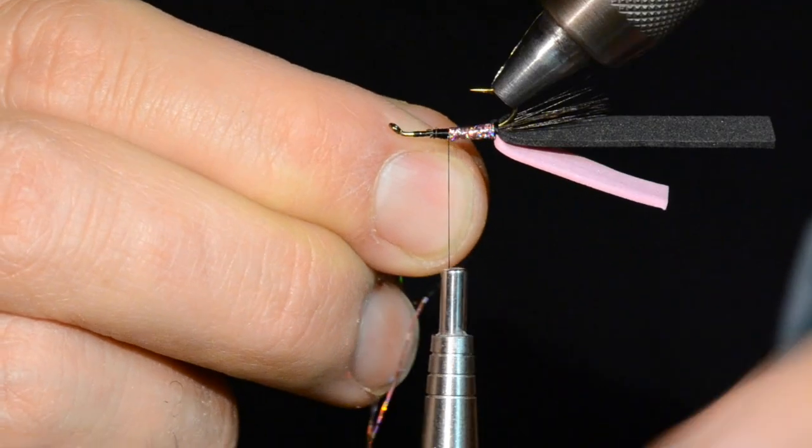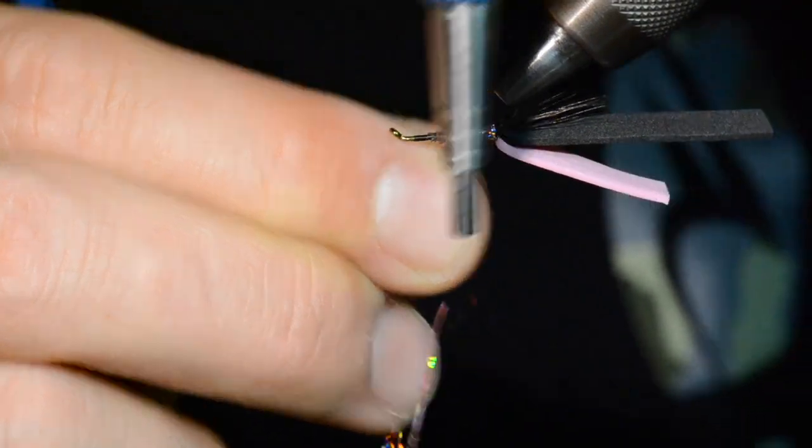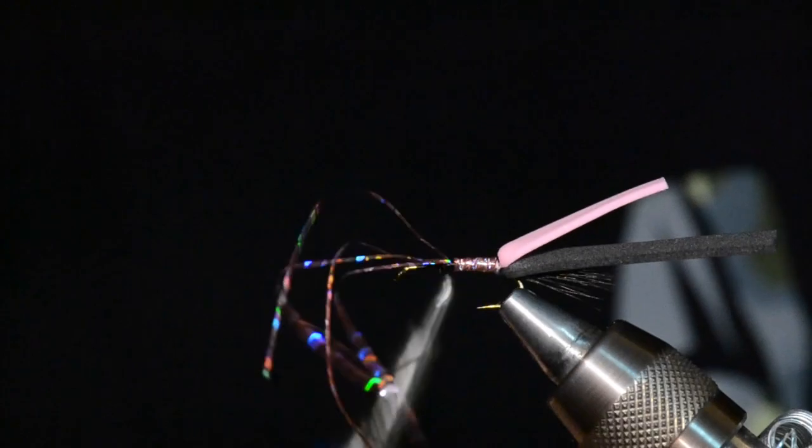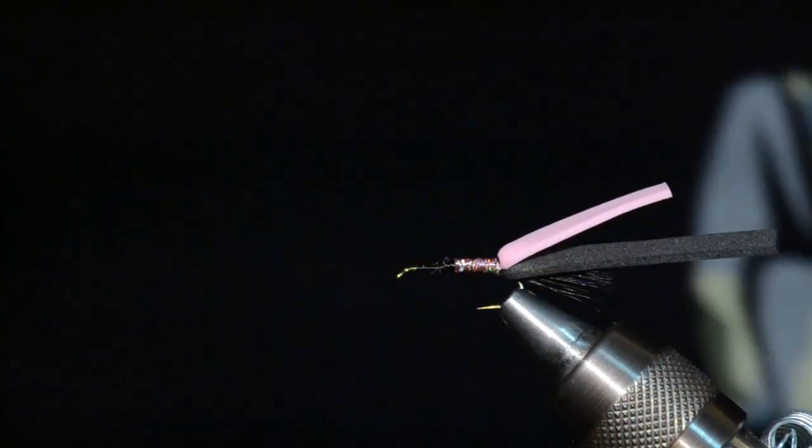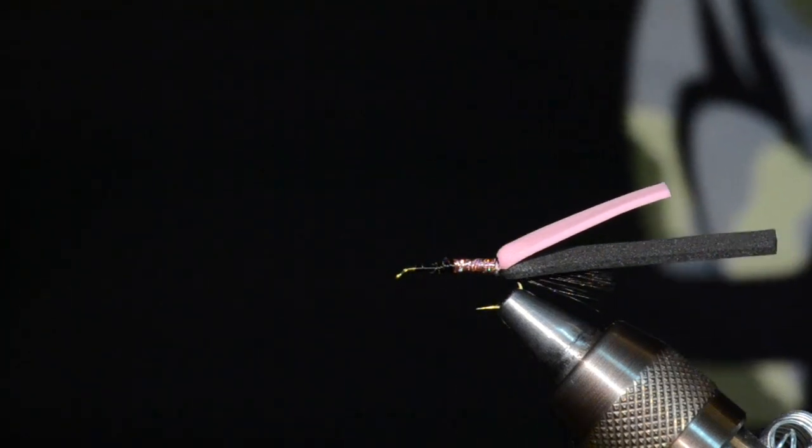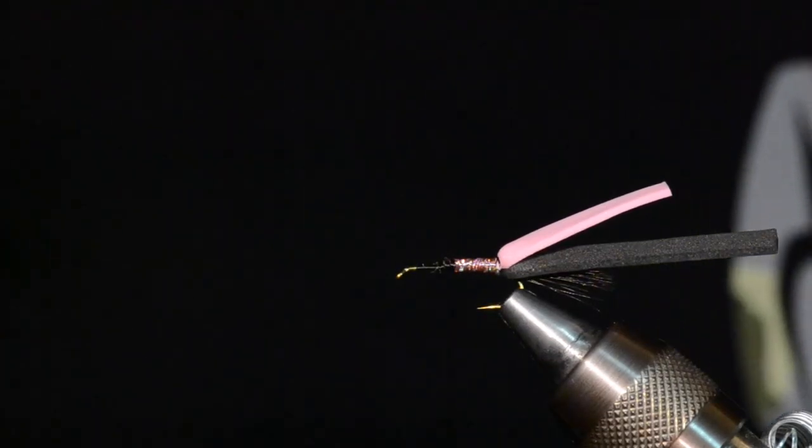That's pretty good for our underbody. Now I'll take a wrap and secure that Flashaboo. One more, and a third, and a fourth. That should be sufficient. Go ahead and cut that. Making some good progress here.